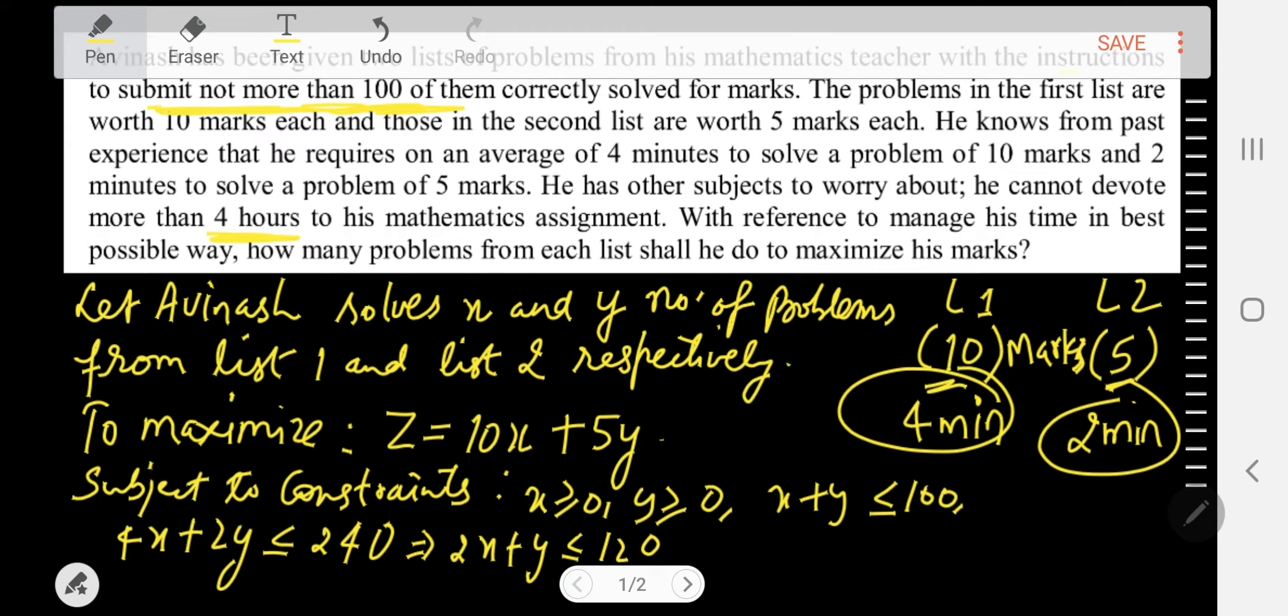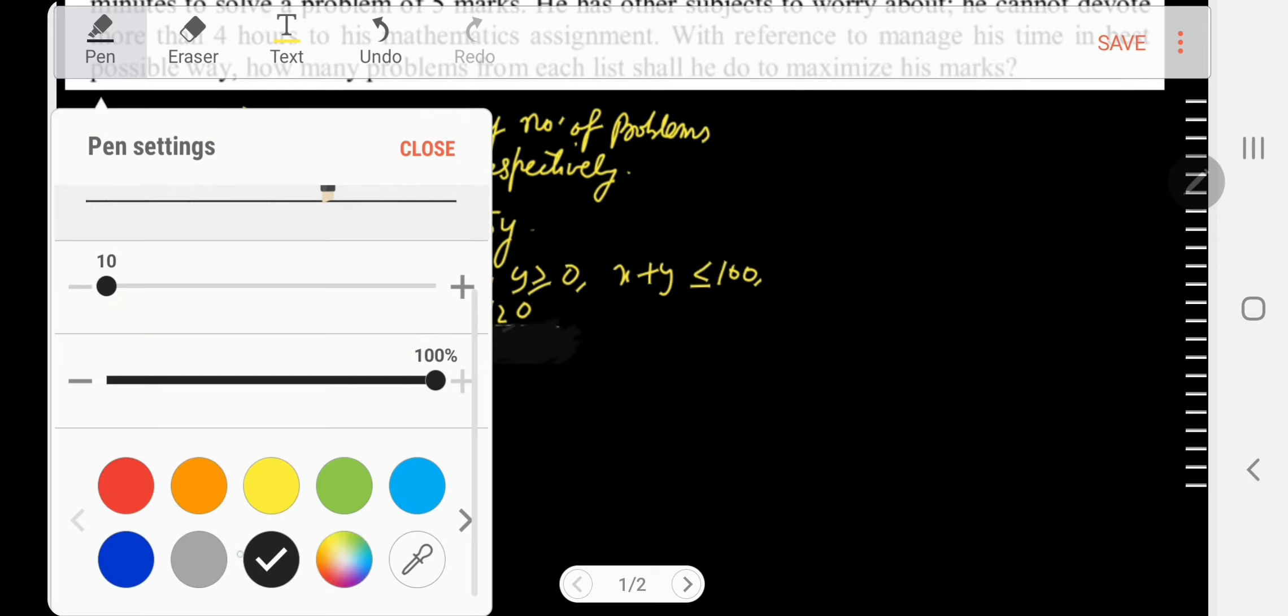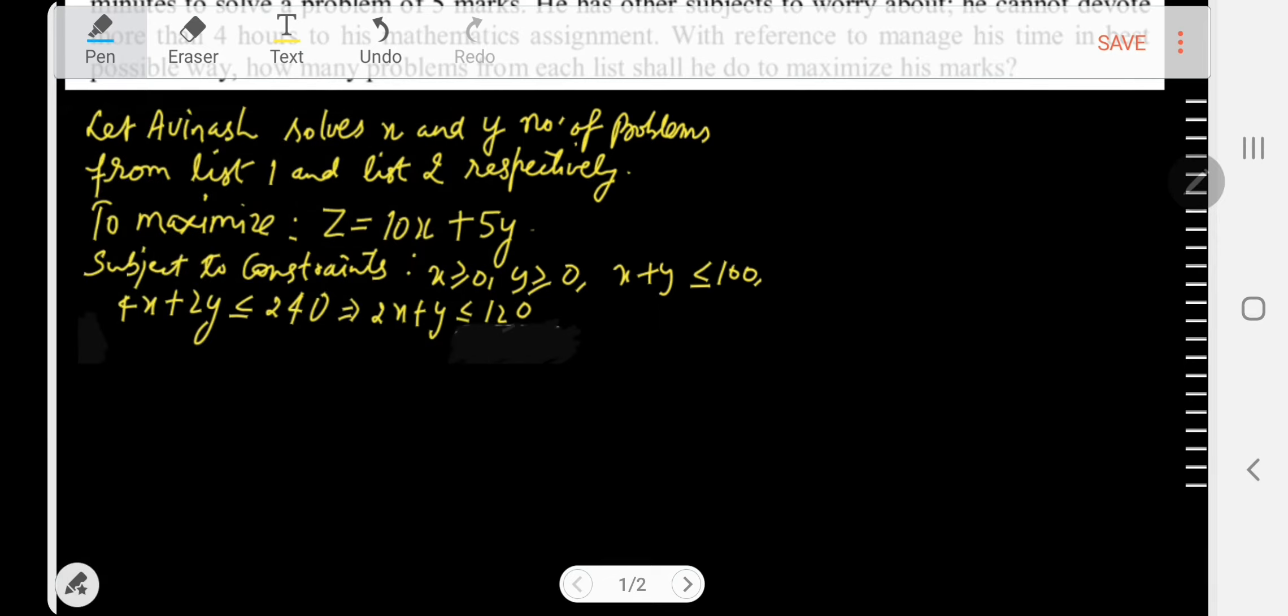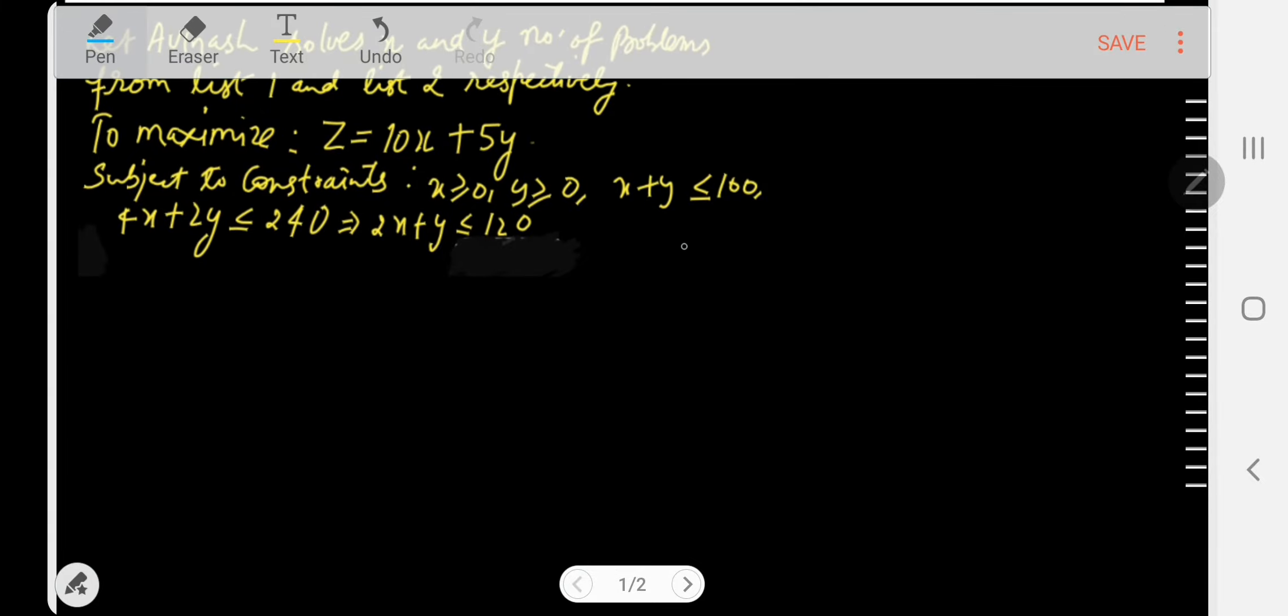Now we shall plot the graph and proceed further. Here we have the y-axis and this is the x-axis, this is the origin. For these constraints we have to form the graph. Let's have a scale of 40 on each axis: 40, 80, 120, and then again here 40, 80, and then 120 on the y-axis.